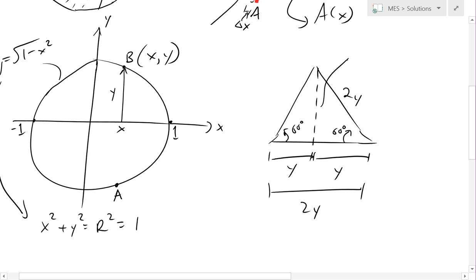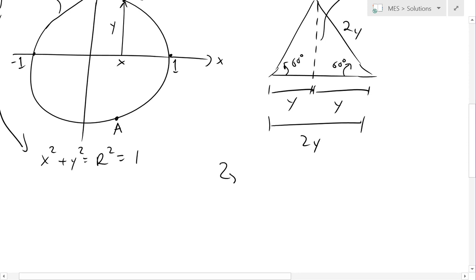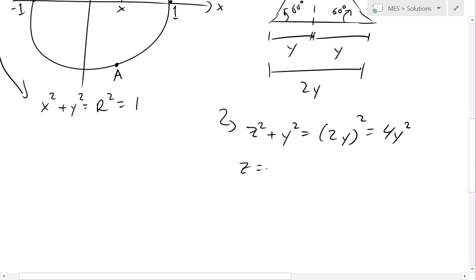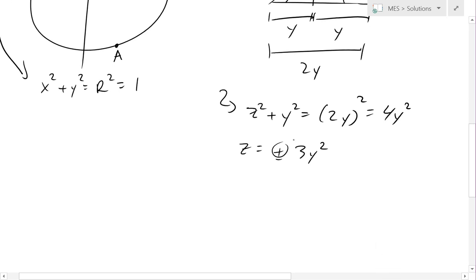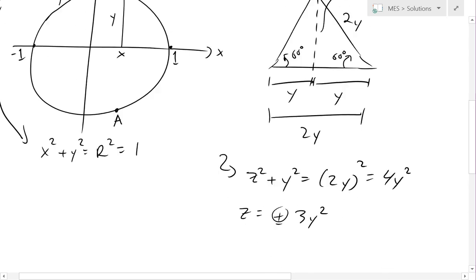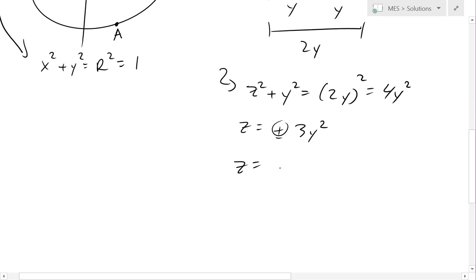Now we have this side. Now we can solve for this. I'll call this value z. We could just use Pythagorean theorem. So we can go z squared plus y squared equals 2y squared. This equals 4y squared. Solve for z. We're only going to consider the positive in this case, because negative doesn't make sense in our example. So z equals square root 3 times y.